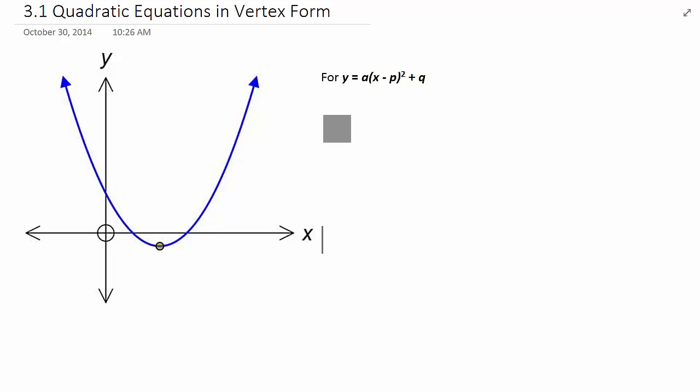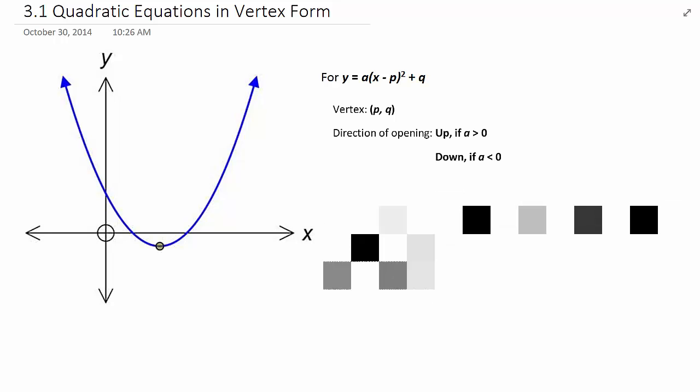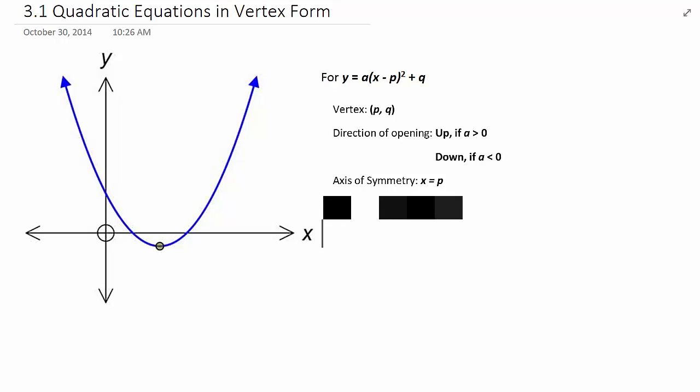For starters, the location of the vertex is always at the coordinates p comma q. And we can tell whether the parabola is opening up or down depending on the value of a. Likewise, if you look at the parabola carefully, you can see that the left side and the right side are symmetrical to each other. They are symmetrical about the vertical line running through the vertex. That would be a vertical line whose equation is x equals p. This is called the axis of symmetry.